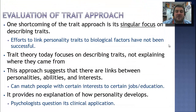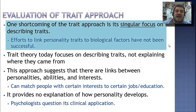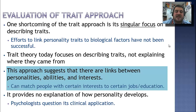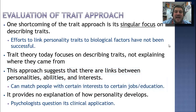How do psychologists evaluate the trait approach? It is very narrow-minded — it has a singular focus on describing traits, and we have not been able to link personality traits to any biological factors. Today it only focuses on describing traits and not explaining where they come from. However, this approach does suggest links between personalities, abilities, and interests, making it very useful and practical in career and interest inventory tests to match people with certain jobs and educational skills. It does not provide an explanation of how personality develops — it's just a snapshot of a person describing their traits, so psychologists question its clinical application.